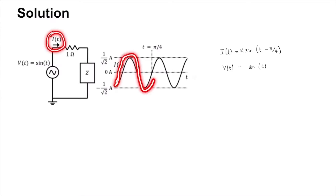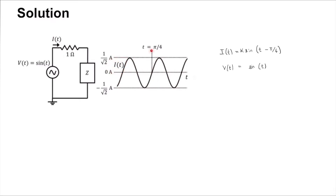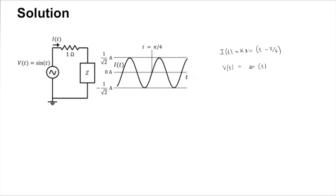We are given the waveform for the current i(t). The current i(t) is equal to 0 at t = π/4, which means it is a sinusoid with some amplitude k, but it is sine(t - π/4). The voltage excitation is sine(t), so there is a delay.